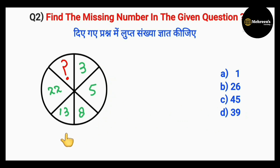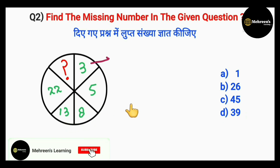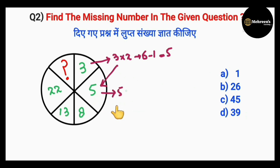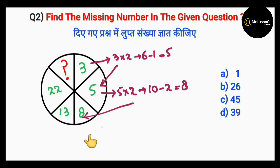Second question — missing number is here and these are the options. Moving clockwise, the first number is 3, then 5, then 8, and so on. We check: what operation on 3 gives 5? If we do 3 into 2, that's 6, minus 1 gives 5. Now for 5: 5 into 2 is 10, but the next number is 8, so 10 minus 2 gives 8. Then for 8: 8 into 2 is 16, minus 3 gives 13.